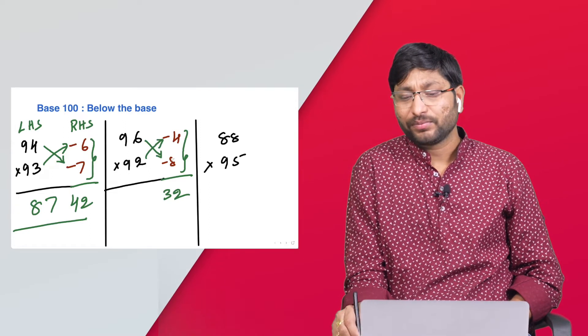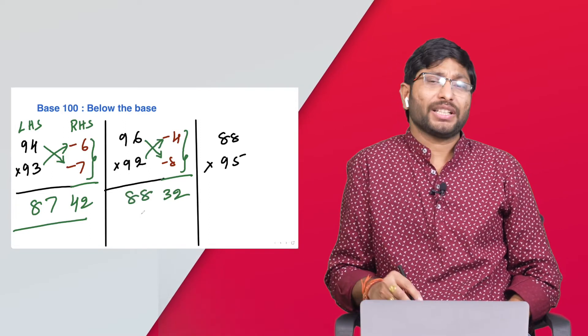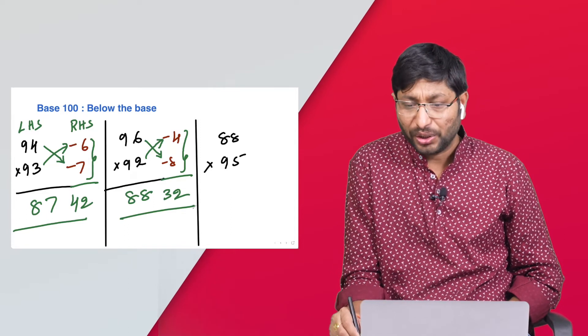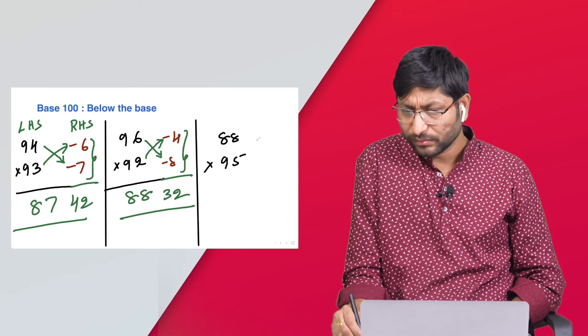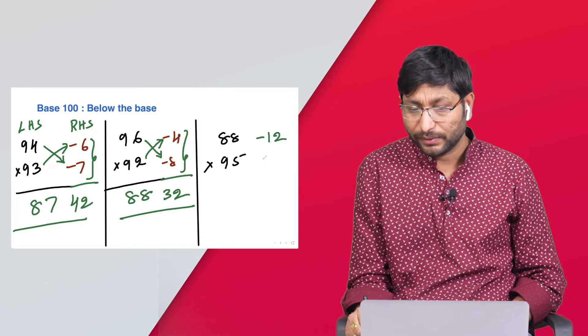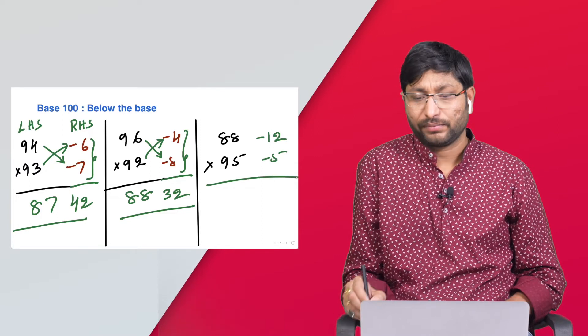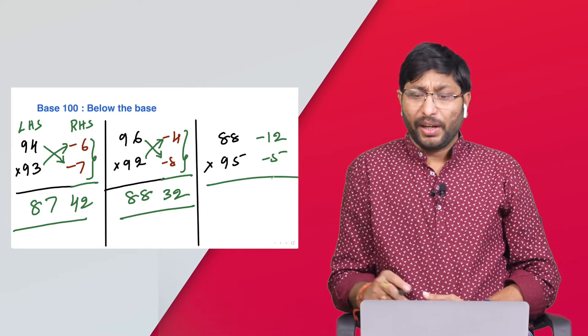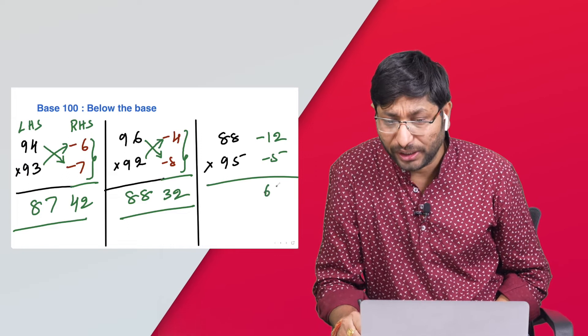Minus 12, minus 5. 100 minus 5, 100 minus 12. 12 times 5 is 60, and 83. In one step you can solve this question in 5 seconds.